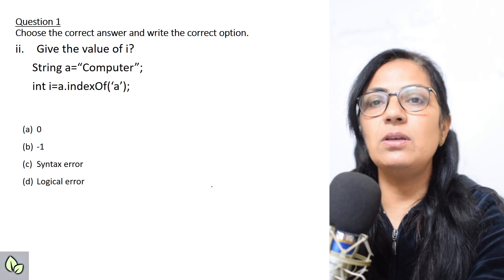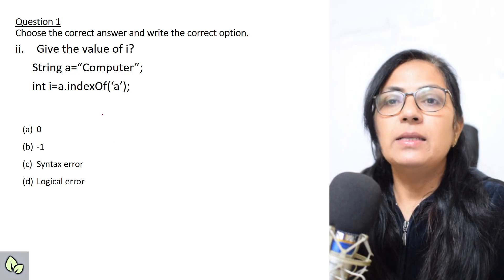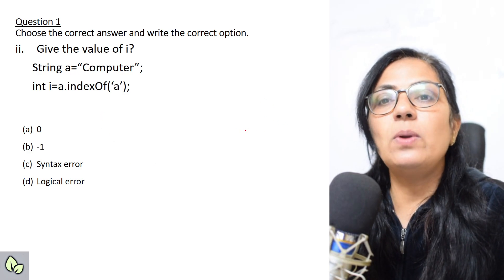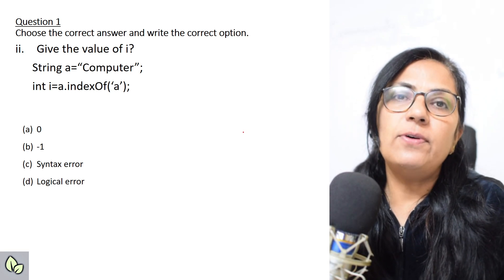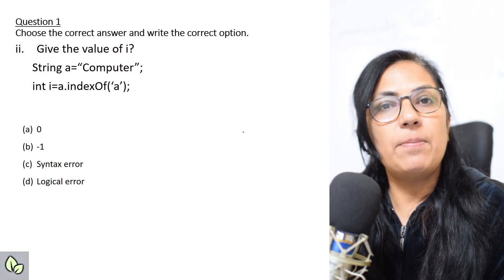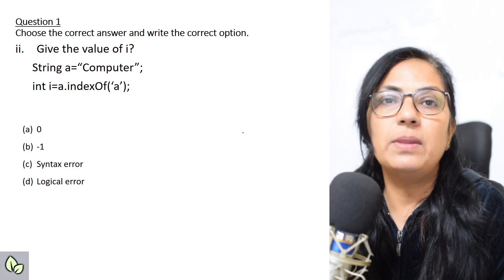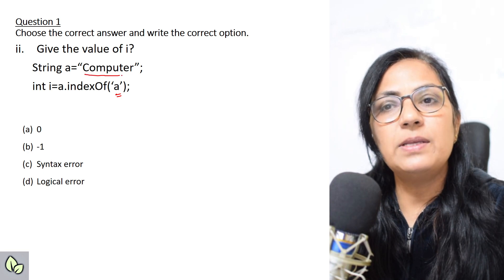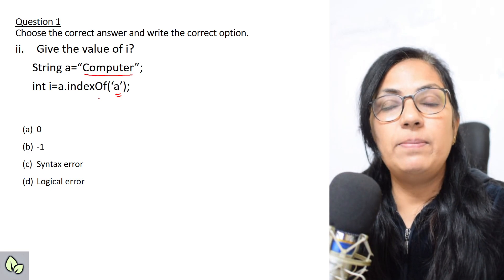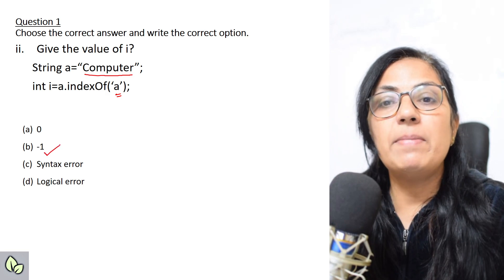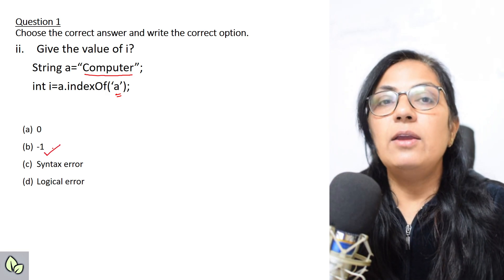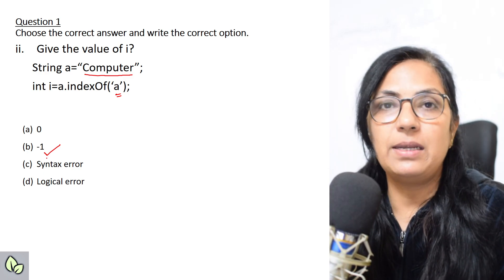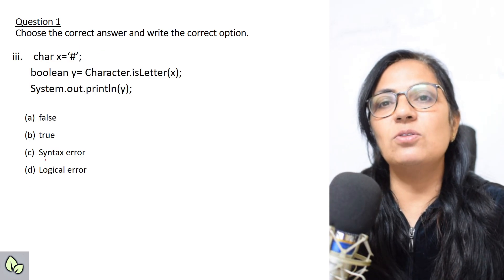Next question: what will be the value of i? String a = "computer", int i = a.indexOf('a'). The indexOf function returns the index number of the given character. Since 'a' is not present in the string 'computer', indexOf will return minus one. Always, if the given character is not present in the string, indexOf returns -1.